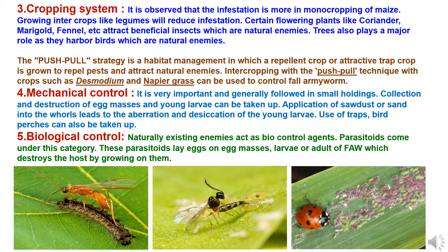The fourth method is mechanical control, which is very important and generally followed in small holdings. Collection and destruction of egg masses and young larvae can be undertaken. Application of sawdust or sand into the whorls leads to abrasion and desiccation of young larvae. Use of traps and bird perches can also be taken up.